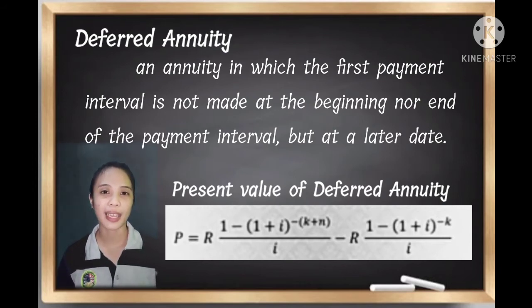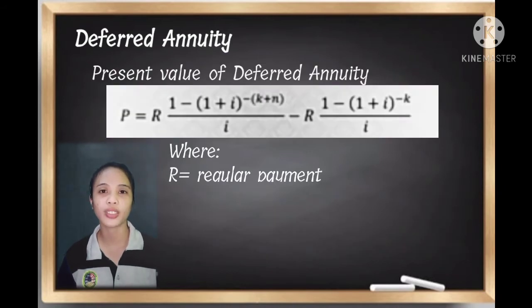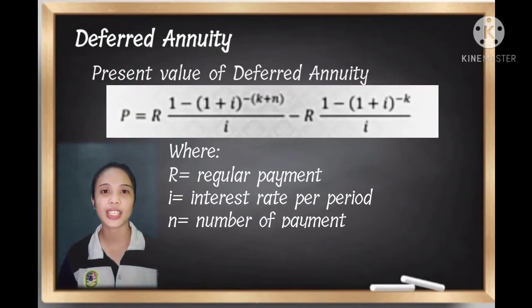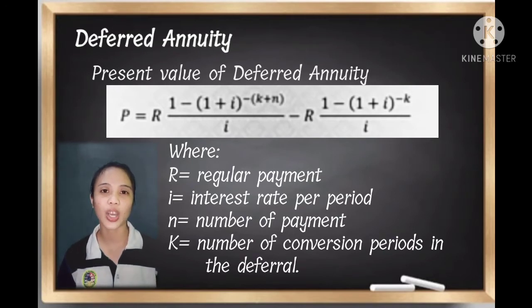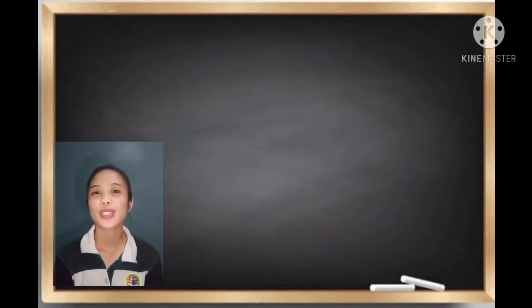R is the regular payment, I is the interest rate per period, N is the number of payments, and K is the number of conversion periods of the deferral.